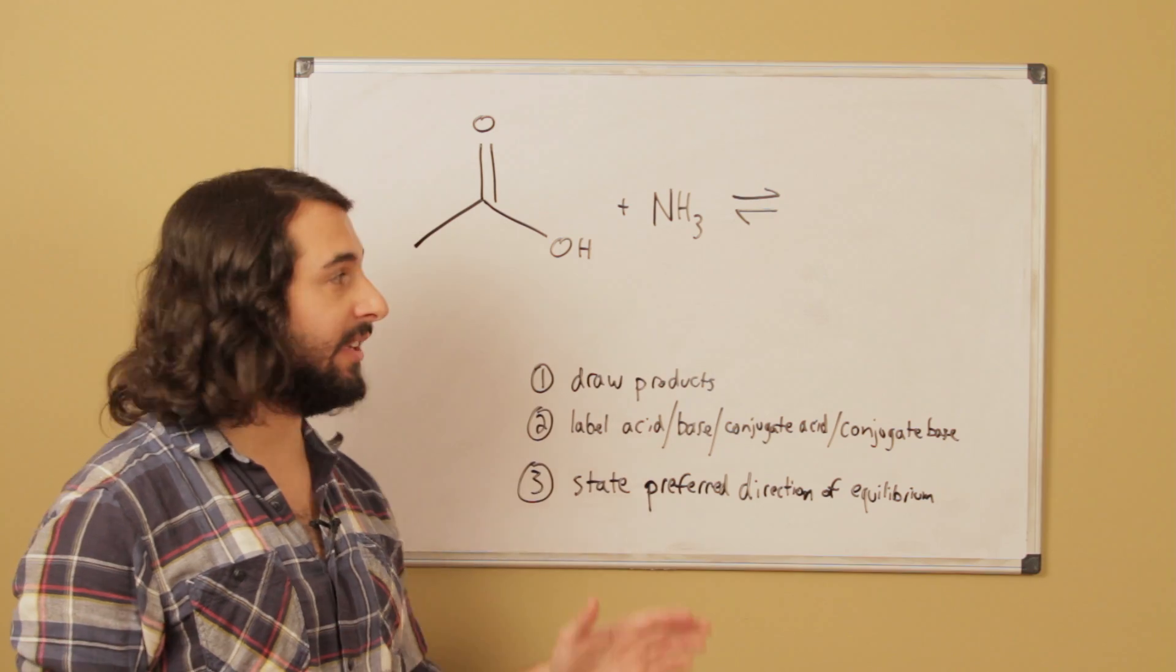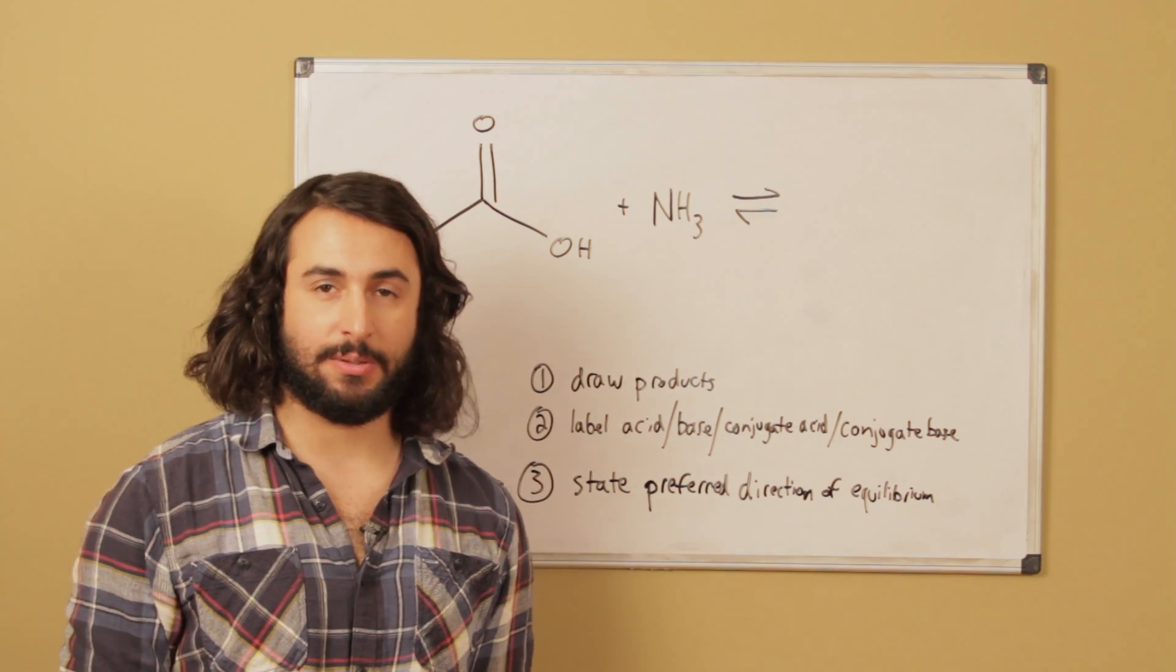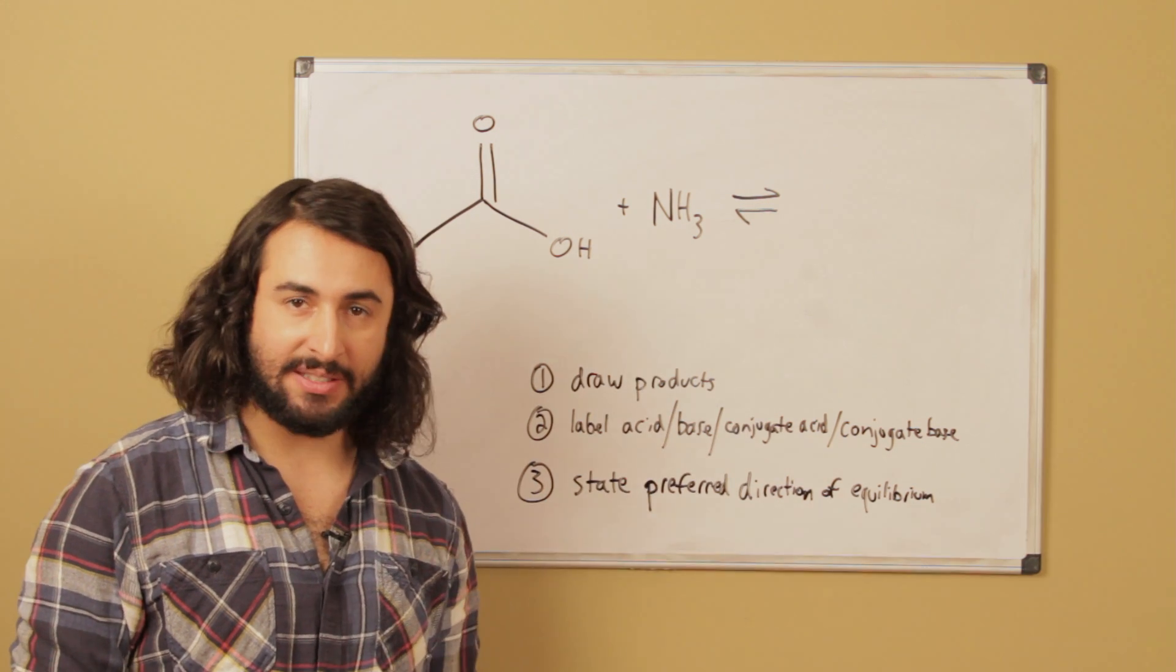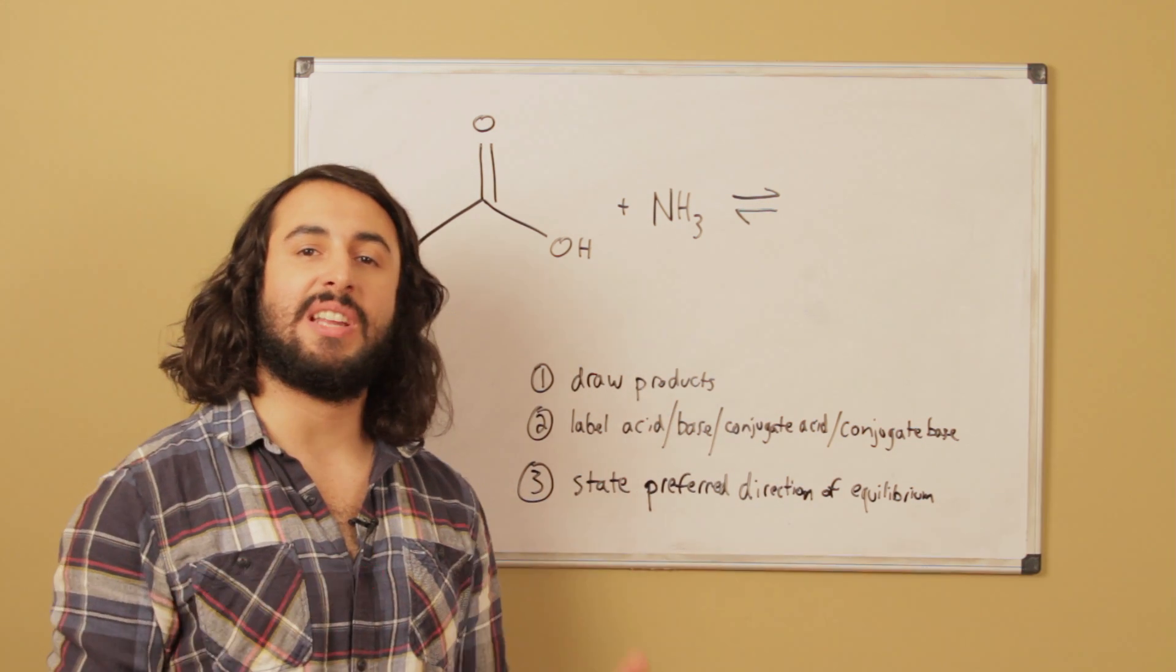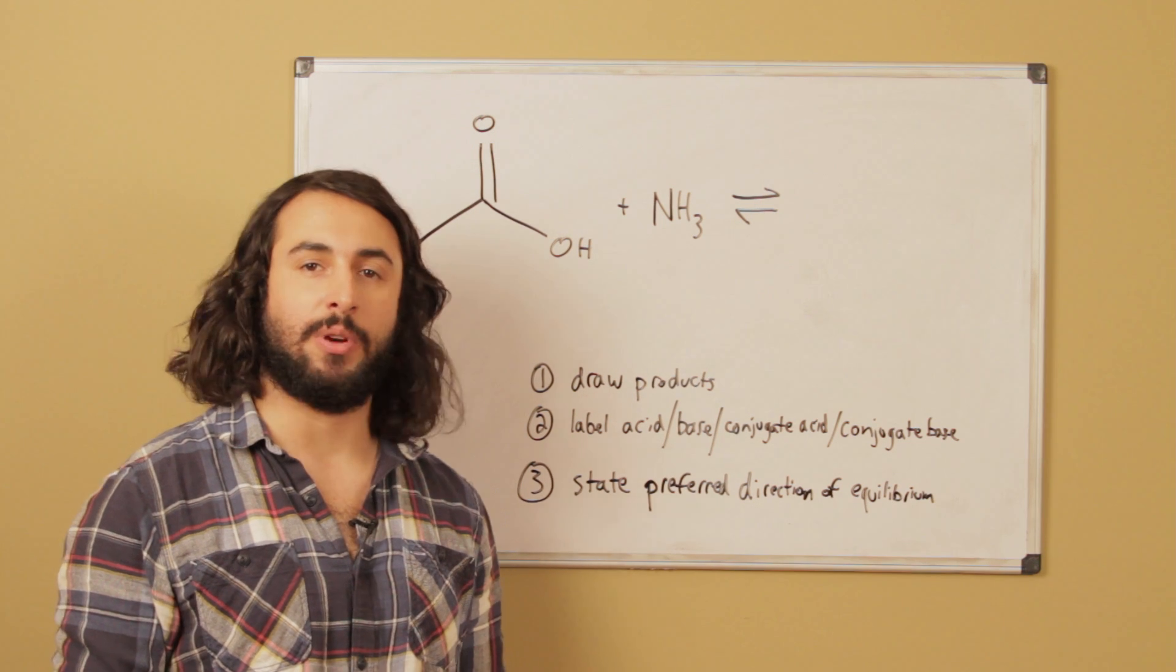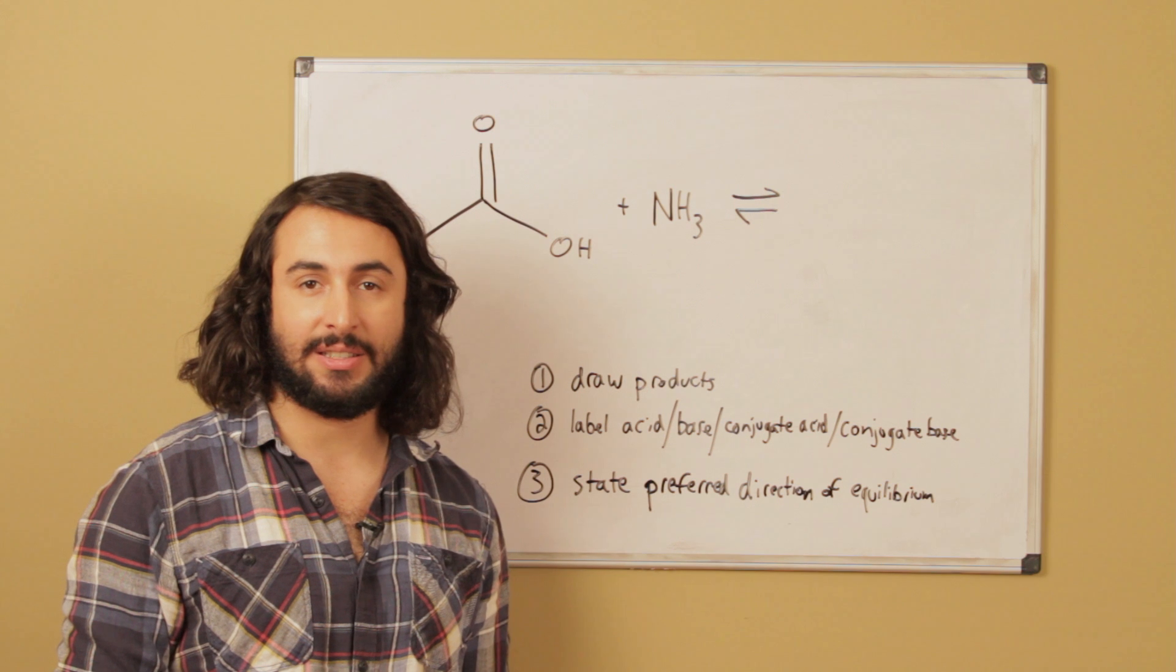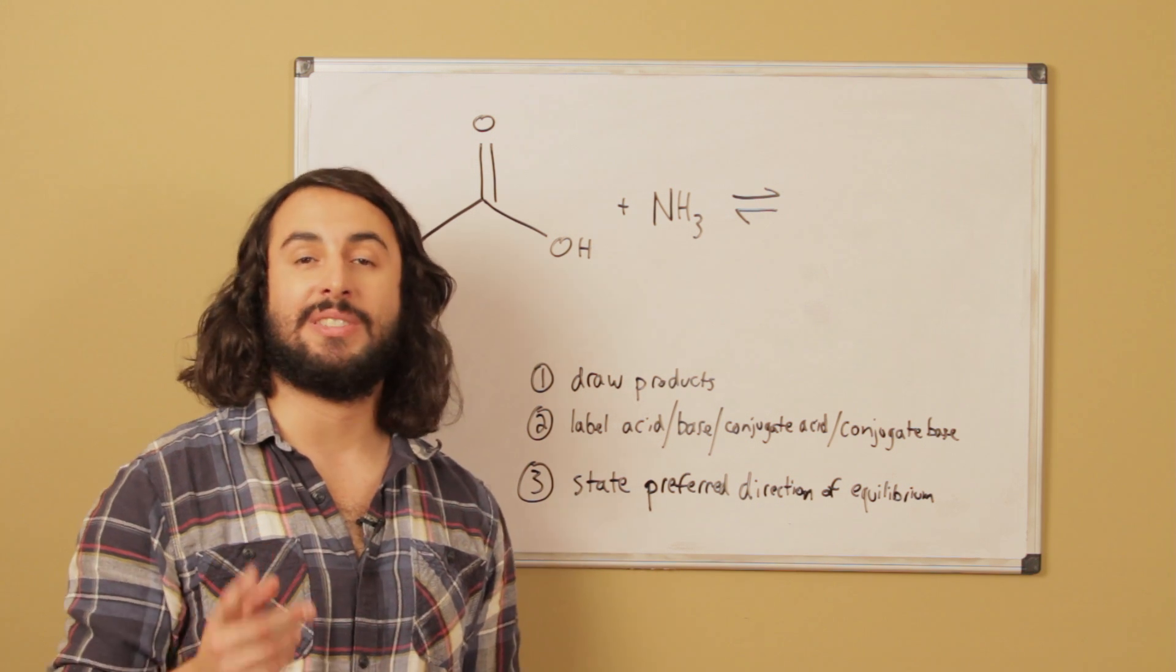What we want to do is first draw the products of the acid-base reaction, number two label everything as acid, base, conjugate acid and conjugate base, and then lastly state the preferred direction of the equilibrium. One direction is going to dominate over the other due to the pKa's of the acid and the conjugate acid.